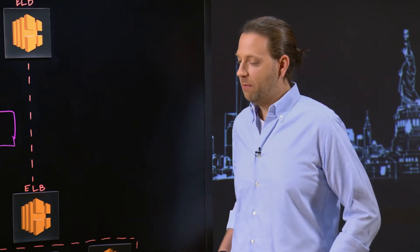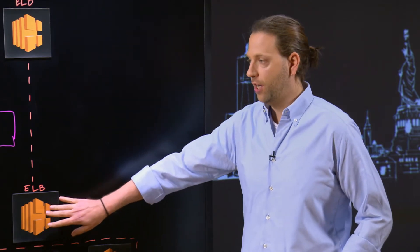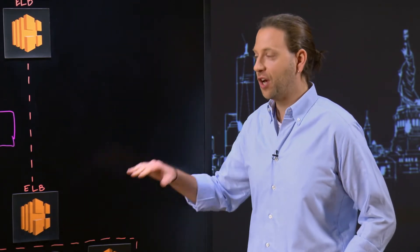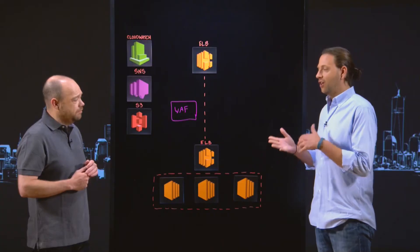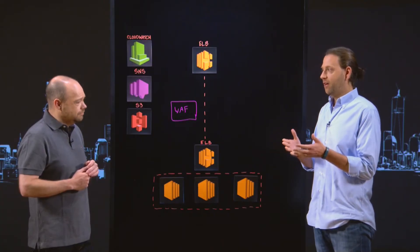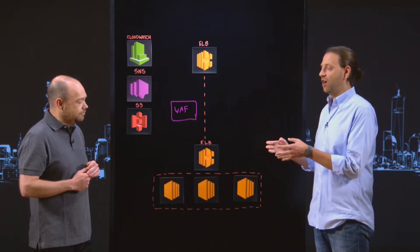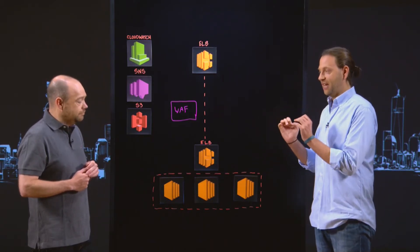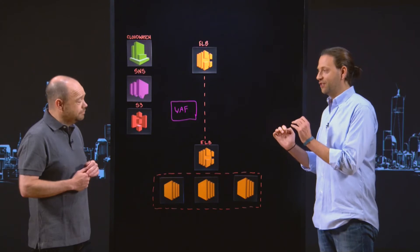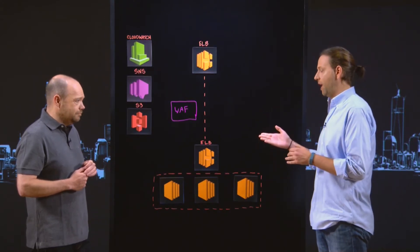I might be a customer that has a web application on AWS fronted by an ELB, knows I need a WAF, but doesn't know what to configure in it — and so I can use these predefined policies. Alternatively, I may be a customer using F5 in a different environment, who has invested time configuring a security policy to exact specifications that's been blessed by my InfoSec team, and now I want to bring that into AWS.